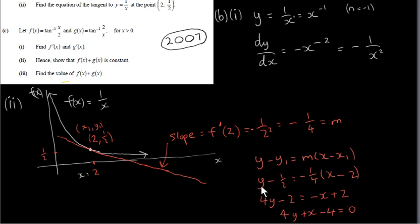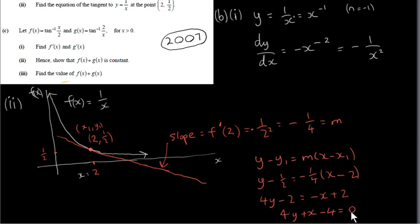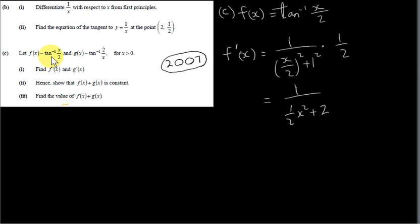Plugging everything in — 1/2 for y1, minus 1/4 for m, and 2 for x1 — then multiplying both sides by 4 gives 4y minus 2 equals minus 1 times x minus 2, which is minus x plus 2. Bringing everything to one side gives 4y plus x minus 4 equals 0. As a check, plug 1/2 in for y to get 2, and 2 in for x to get 2, giving 2 plus 2 minus 4 equals 0. ✓